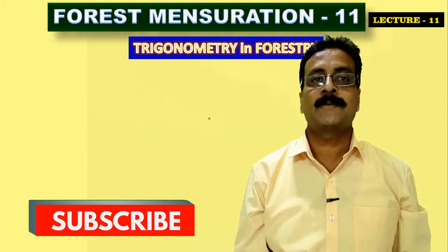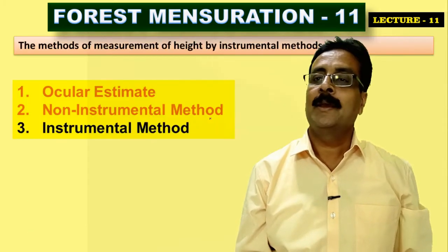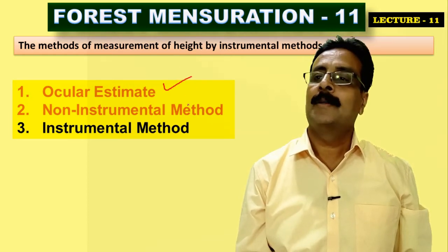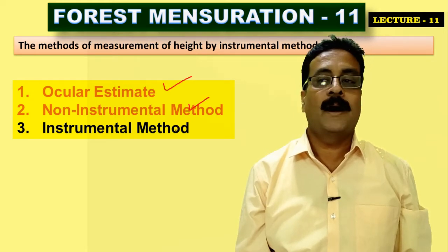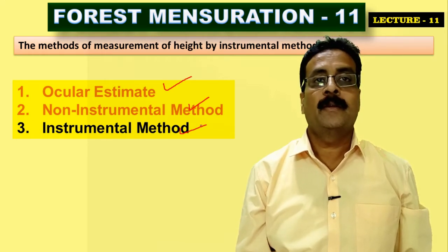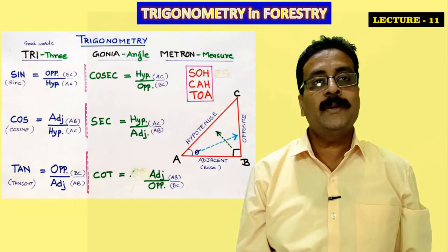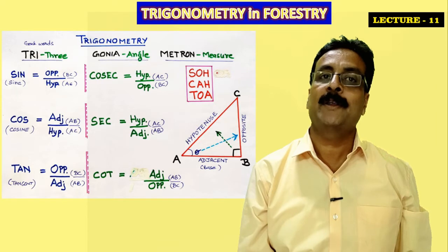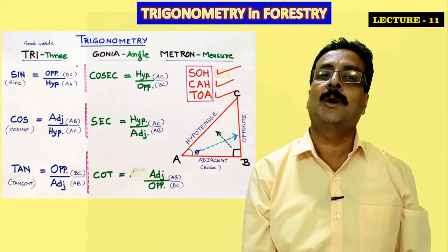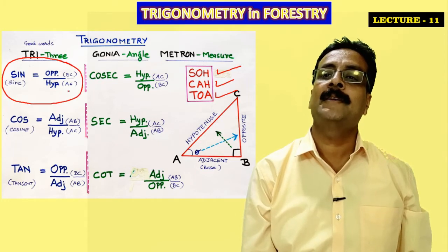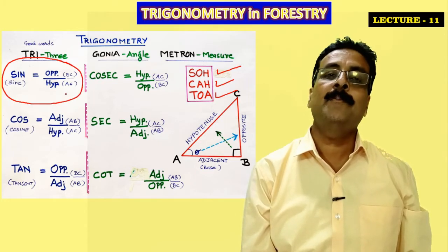In my previous lectures I have already covered ocular estimation, non-instrumental methods, and instrumental methods. Now I'll be taking up pure trigonometry in forestry. In trigonometry we use SOH-CAH-TOA. Sine means opposite over hypotenuse — this is very important for non-right angle triangles, to measure trees which are not at a right angle.